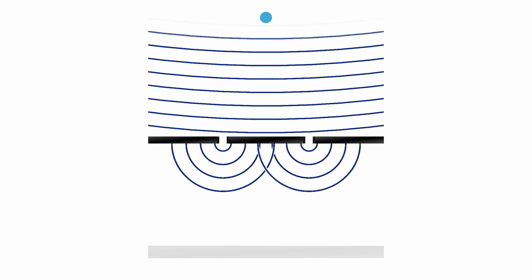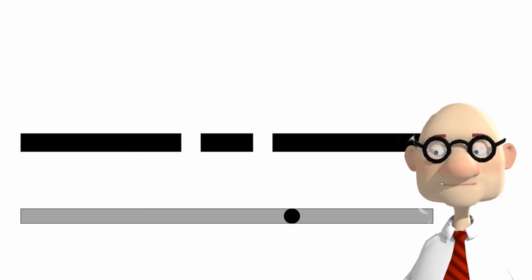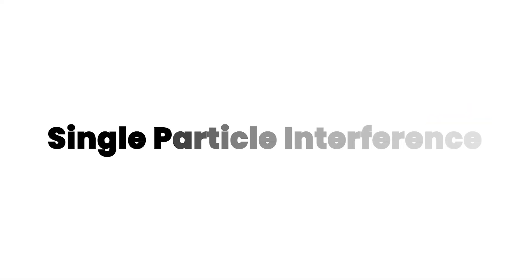Wave particle duality first. When you send lots of particles through a double slit, they interfere with each other and behave like a wave. But particles are countable entities. When observed, they're in one place.